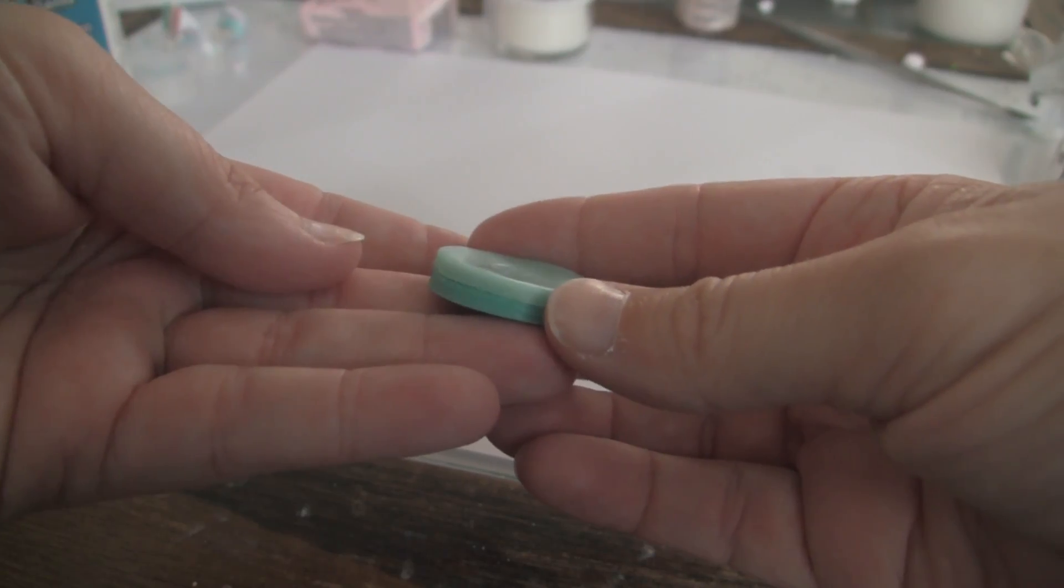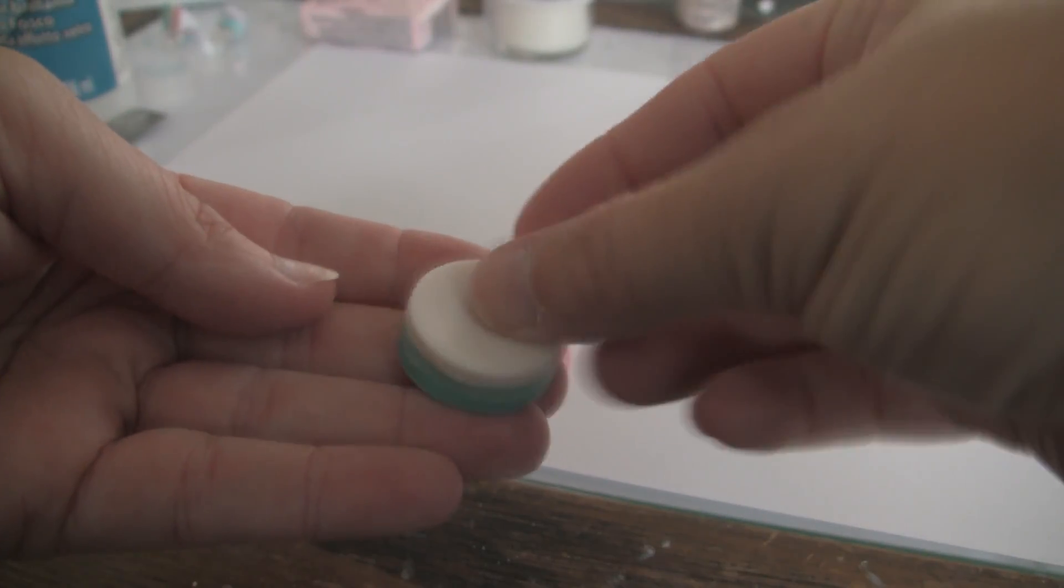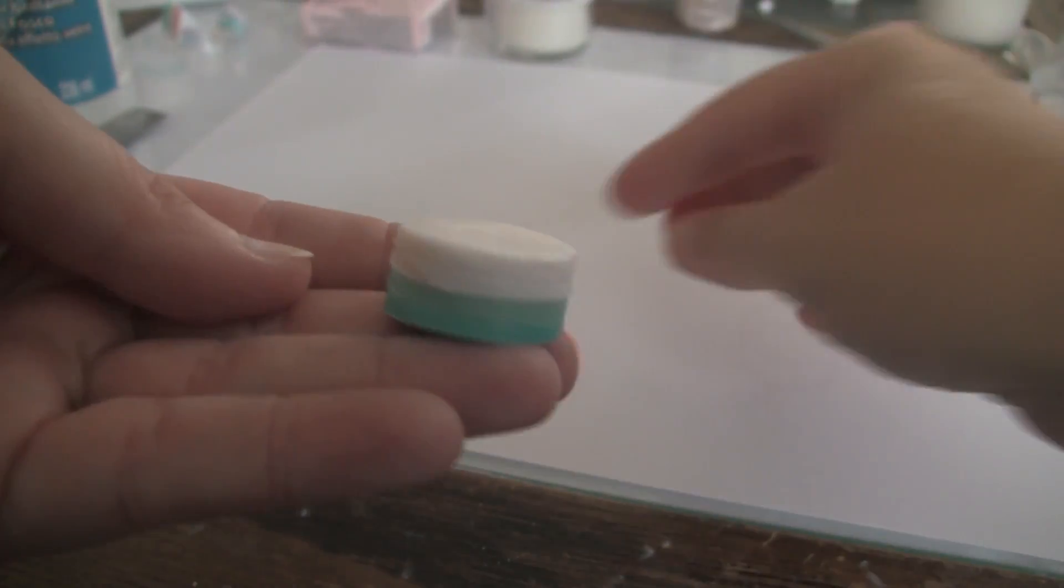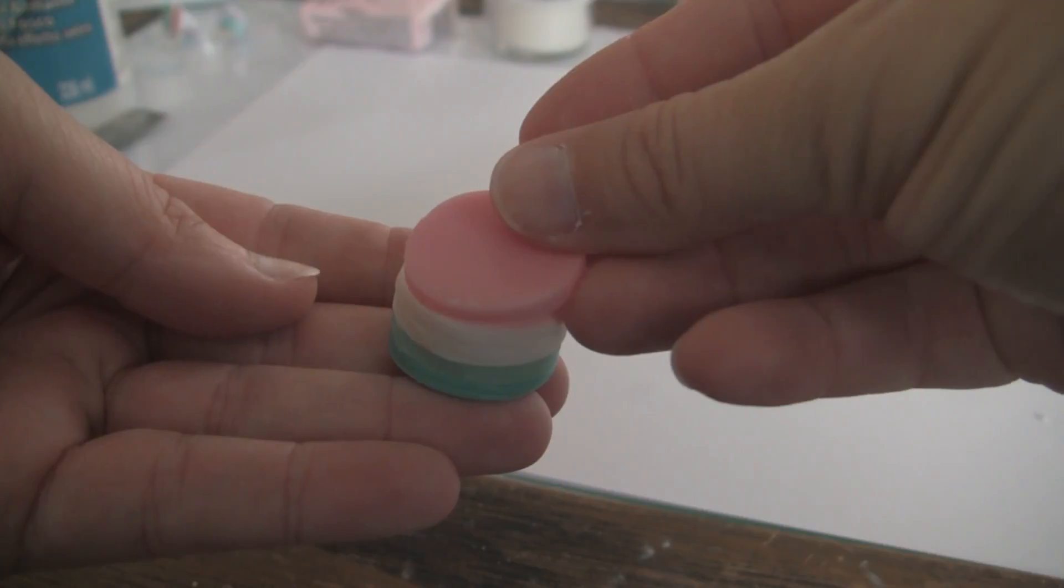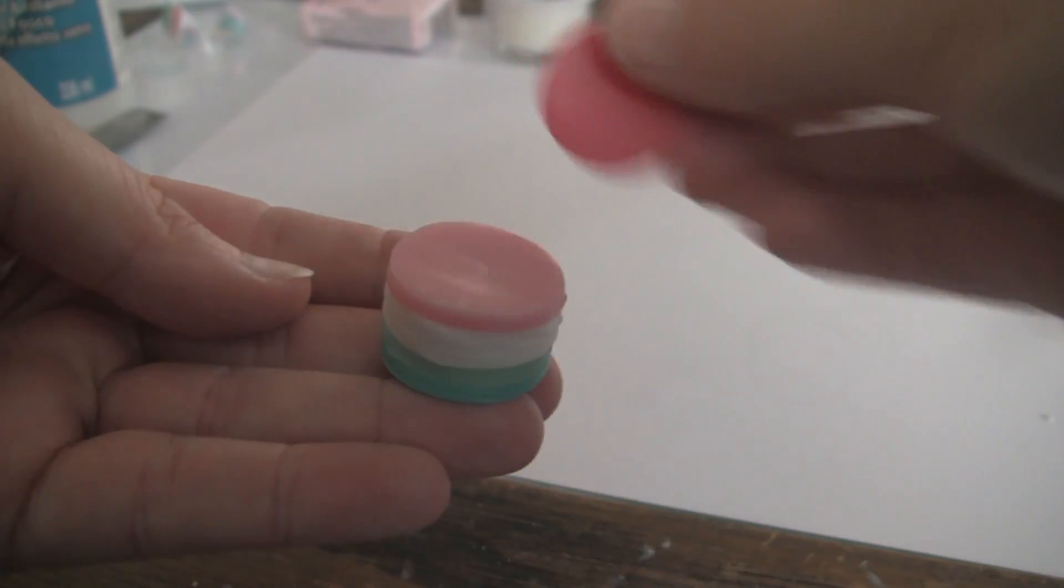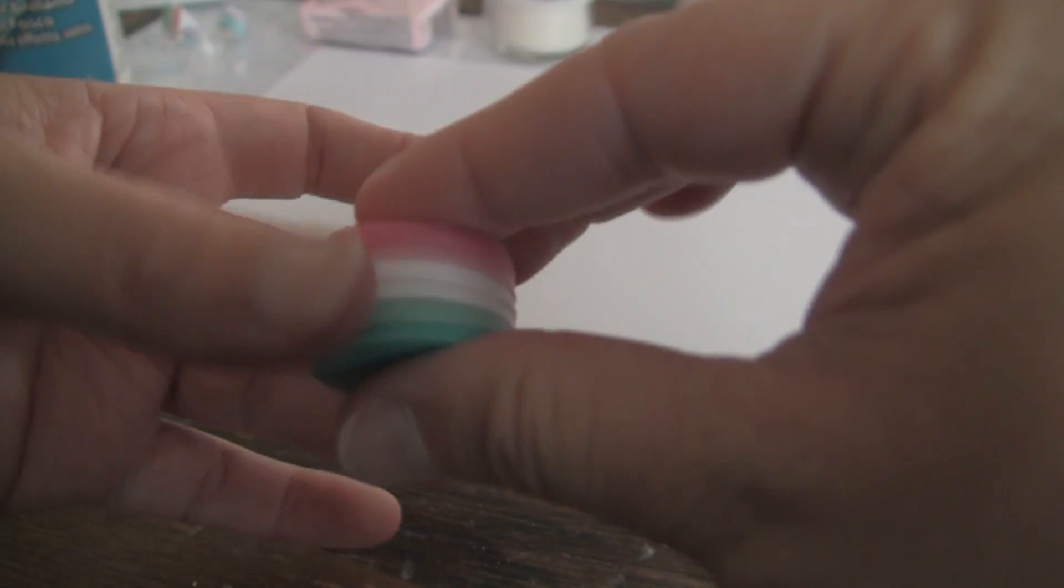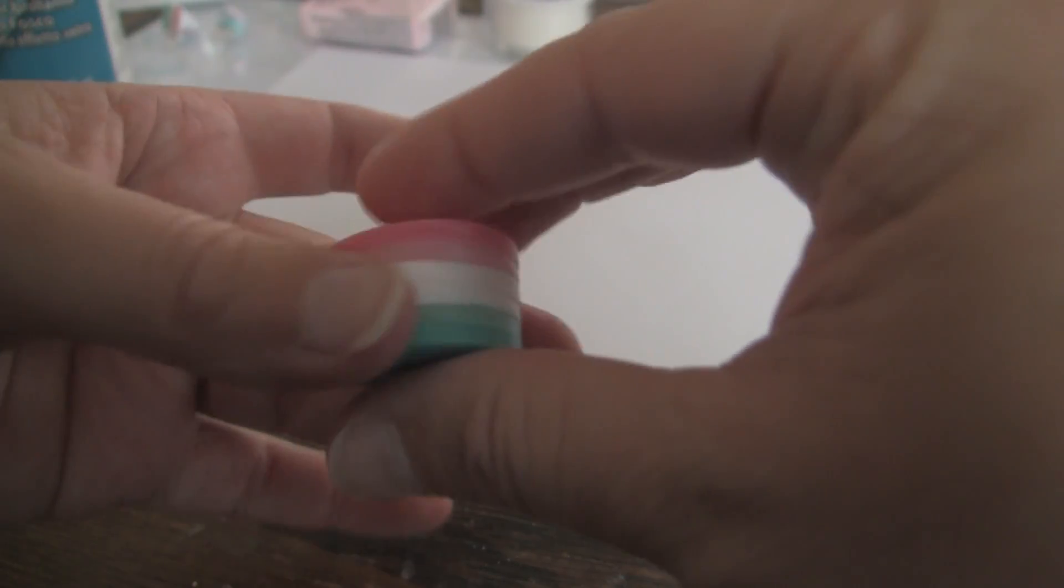I have the dark aqua, medium aqua, two layers of the white cake, the pale pink, and the dark pink. I push and spin to even it out.